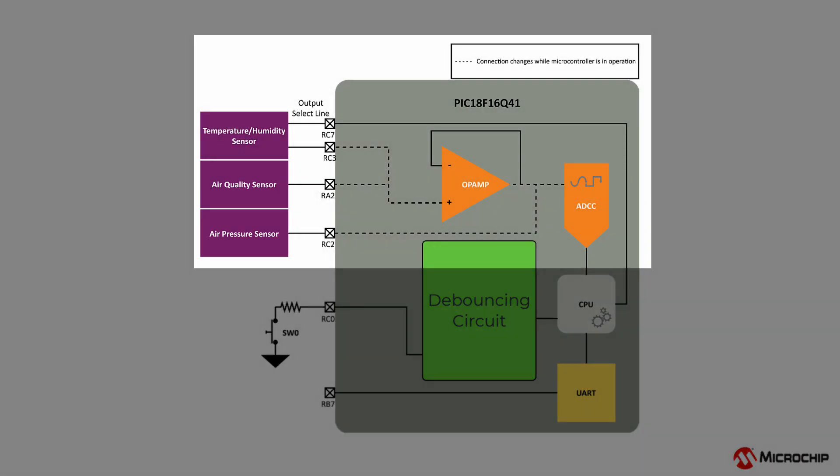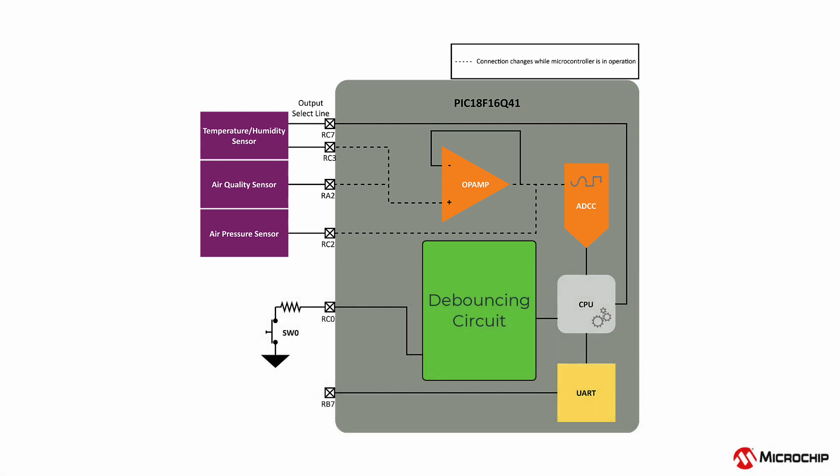By enabling and disabling certain op-amp connections, the user can switch between all three sensors on the same ADCC channel. This allows for rapid reconfigurability while switching between sensors during operation.